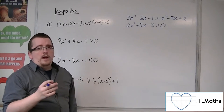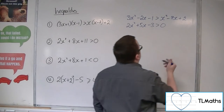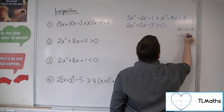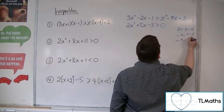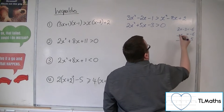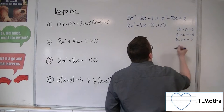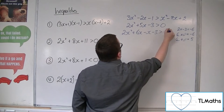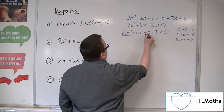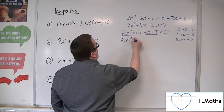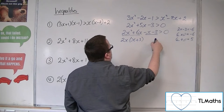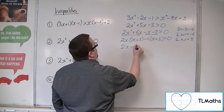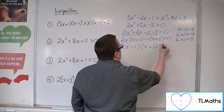We then want to solve this. To factorise: 2 times minus 3 is minus 6, so two numbers that multiply to make minus 6 but add to make 5 would be 6 and minus 1. So we have 2x squared plus 6x minus x minus 3 is greater than 0. Factorising both halves gives 2x minus 1 times x plus 3 is greater than 0.